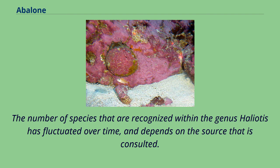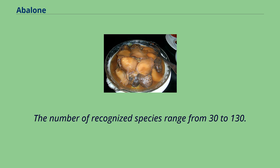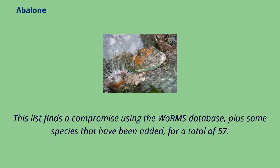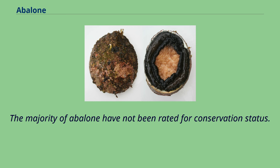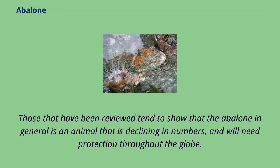The number of species recognized within the genus Haliotus has fluctuated over time and depends on the source consulted, ranging from 30 to 130. This list finds a compromise using the WoRMS database, plus some species that have been added, for a total of 57. The majority of abalone have not been rated for conservation status. Those that have been reviewed tend to show that abalone in general is an animal that is declining in numbers and will need protection throughout the globe.